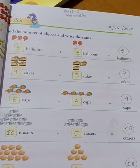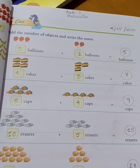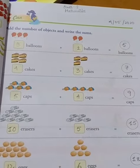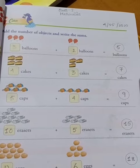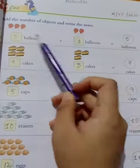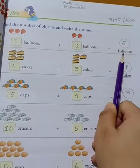Good morning, Class 1. Subject: Math. Date: 4th May 2020. Today we do the exercise: add the number of objects and write the sum. Here are three balloons and two balloons, total five balloons.